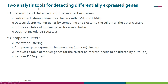It is important to realize that there are two analysis tools in Chipster which can detect differentially expressed genes between clusters. The first is called 'clustering and detection of cluster marker genes.' This tool first performs the actual clustering, then visualizes the clusters using tSNE and UMAP, and then detects cluster marker genes by comparing one cluster to the cells in all the other clusters. It produces a big table of marker genes for every cluster which you can then filter. This tool does not include the DESeq2 test because it would be very, very slow.